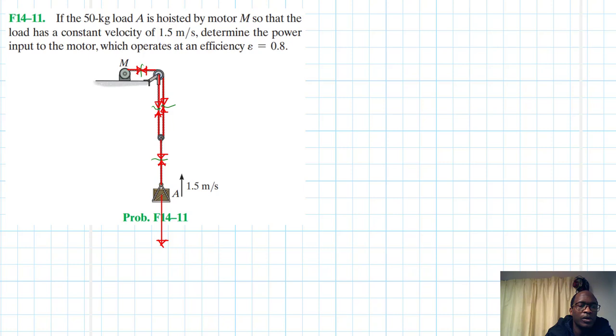Right. So let's call this T, T there, like so. And then this is still T here. You have T, like so. And this just becomes 2T. And this is W.